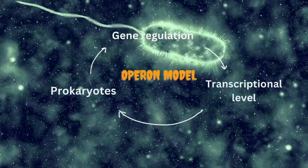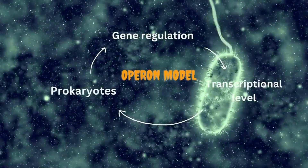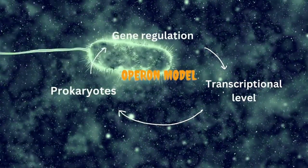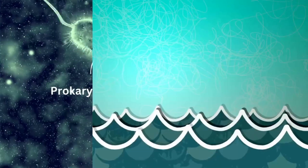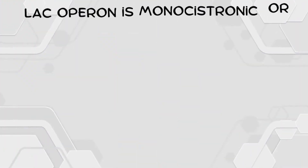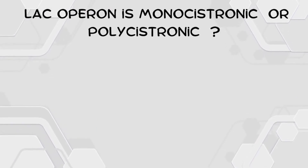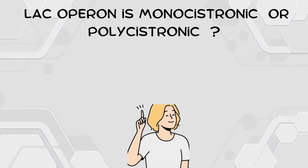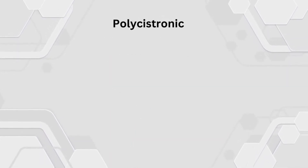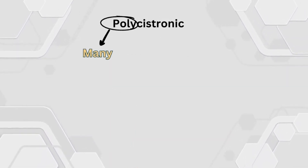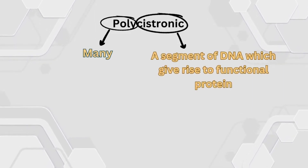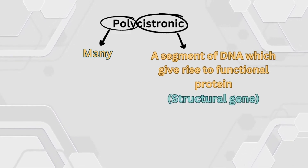As you know, gene regulation at the transcriptional level in prokaryotes was elaborated by a model called the operon model. Before I proceed, let me ask you one question: whether lac operon is monocistronic or polycistronic. The correct answer is polycistronic. Poly means many, and cistronic is a segment of DNA which gives rise to a functional protein. Another name for cistronic is structural gene.